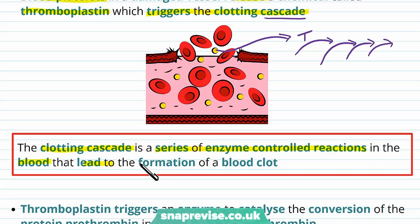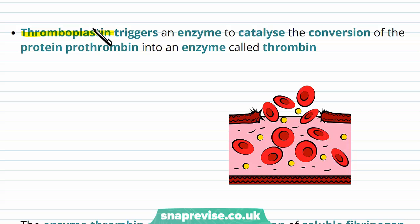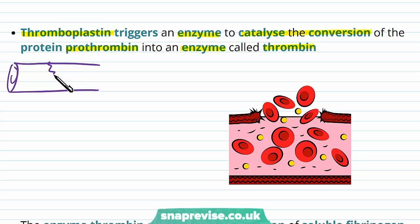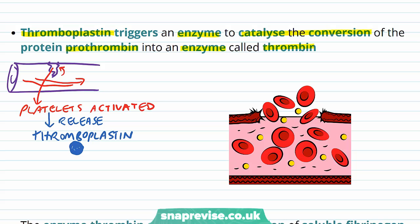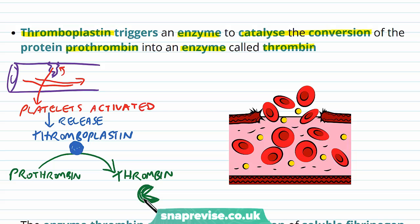Thromboplastin has been released from platelets which were activated by interacting with the collagen in the wall, and it triggers an enzyme to catalyse the conversion of a protein called prothrombin into an enzyme known as thrombin. One way to remember this is that 'pro' usually means before or ahead of, so prothrombin is the pre-form of thrombin — it loses the 'pro' part and becomes thrombin. So the clotting cascade begins: thromboplastin activates prothrombin to form thrombin.